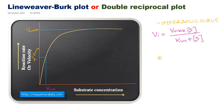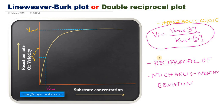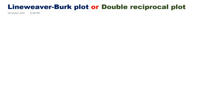If we convert the Michaelis-Menten equation to a linear form, it becomes easy to extend that line in order to calculate either Km or Vmax — that is the Lineweaver-Burk plot, or double reciprocal plot. This is done by taking the reciprocal of the Michaelis-Menten equation.